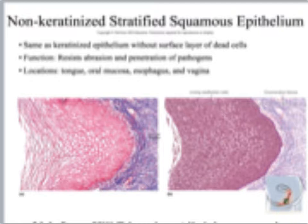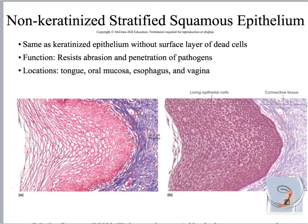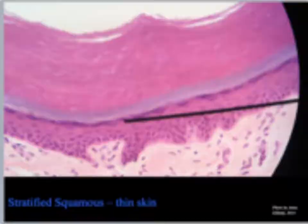This next slide is basically the same thing, except we're showing non-keratinized. Again, here's your free edge and here's your connective tissue proper. Over here, cells are kind of cuboidal or round in shape; over here they start to flatten out and become squamous in shape, so it is still stratified squamous. When you've got a lot of keratin, it makes things tougher and they resist abrasion and water loss even better. We put keratinized stratified squamous on the outside of our bodies, and tend to be non-keratinized on the inside — like inside your mouth or in your vagina — where there's a lot of moisture.